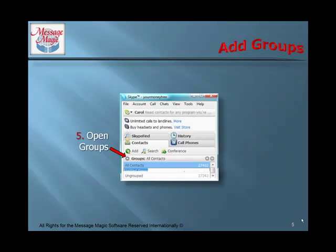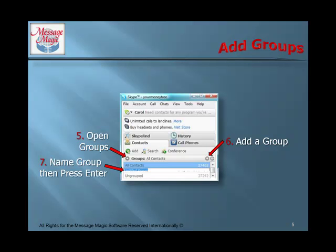Here are the steps for adding groups. Open groups by clicking on this arrow. You can add a new group by clicking on the plus sign here. Name the group, then press Enter, and you can check your group list by clicking here.